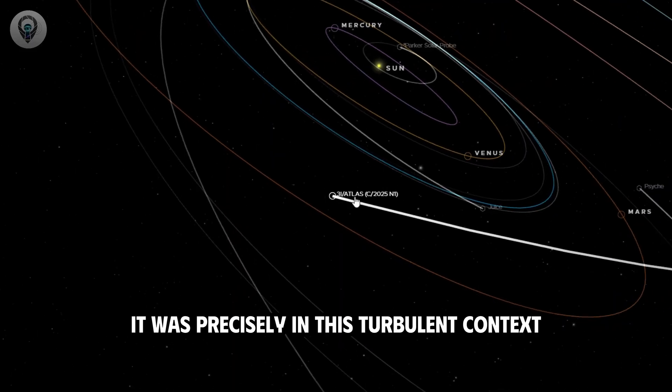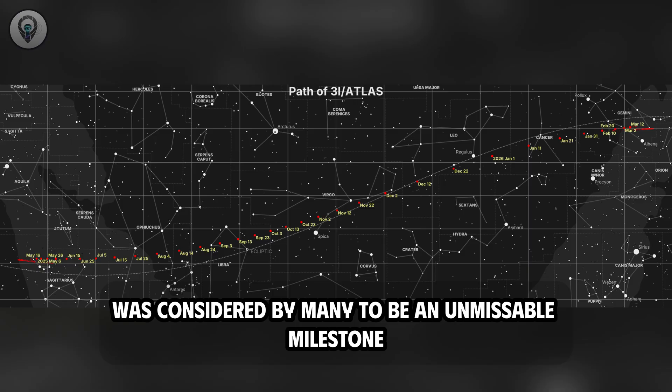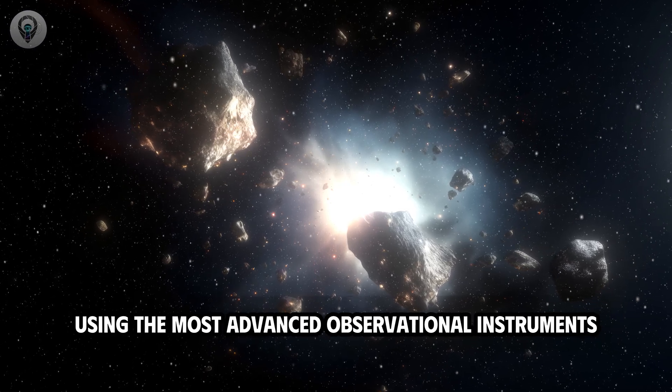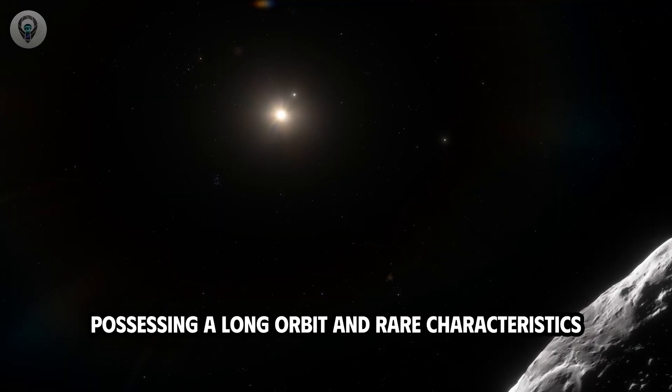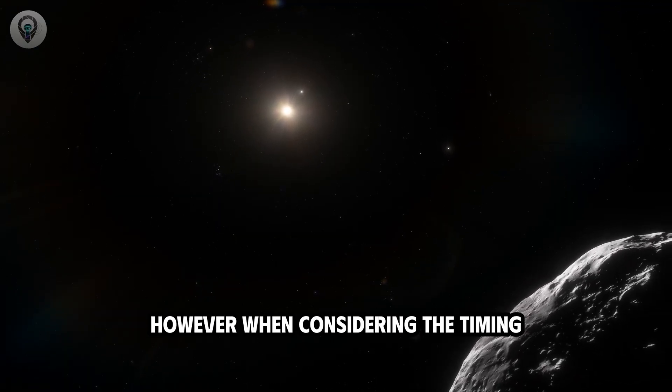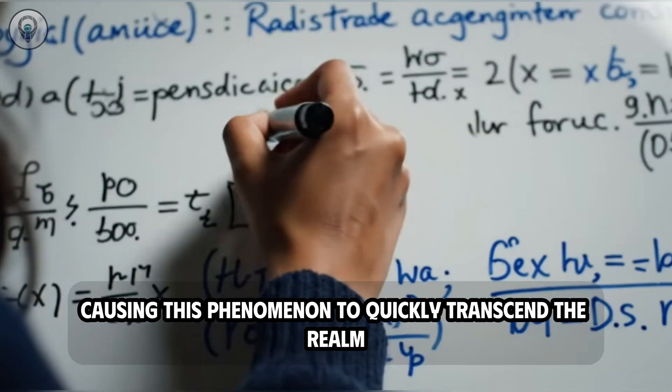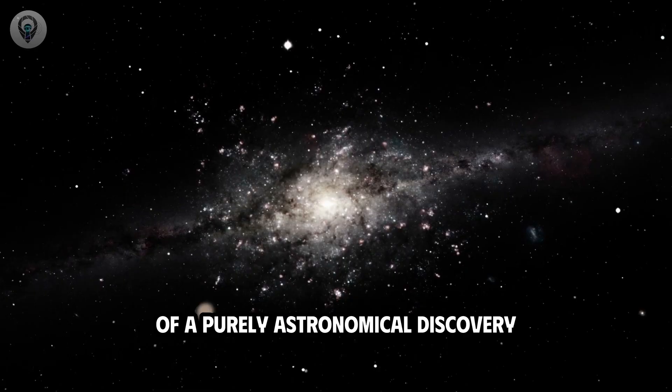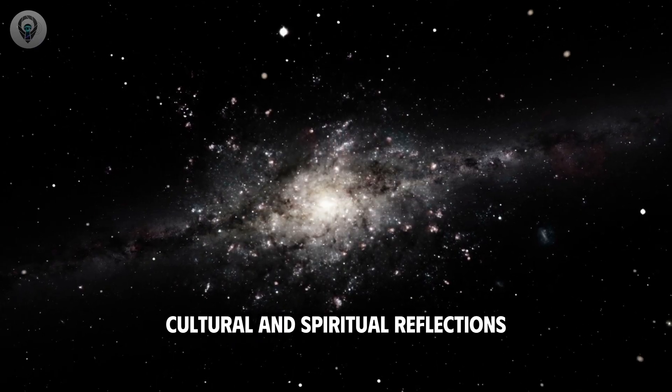It was precisely in this turbulent context that the appearance of 3i Atlas was considered by many to be an unmissable milestone. From a scientific perspective, it was a comet discovered and monitored using the most advanced observational instruments, possessing a long orbit and rare characteristics. However, when considering the timing, 3i Atlas appeared at a critical juncture for humanity, causing this phenomenon to quickly transcend the realm of a purely astronomical discovery, becoming a catalyst for profound historical, cultural, and spiritual reflections.